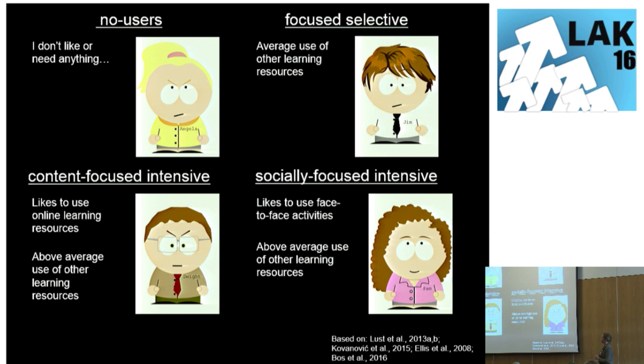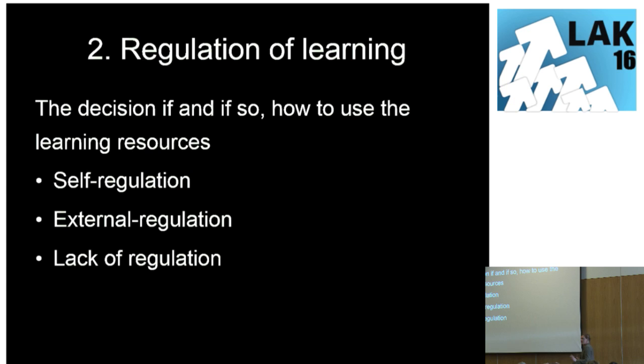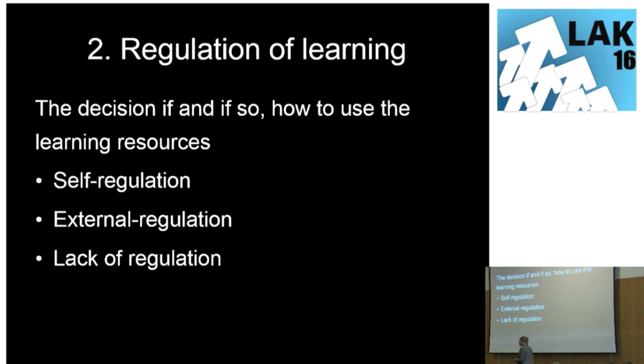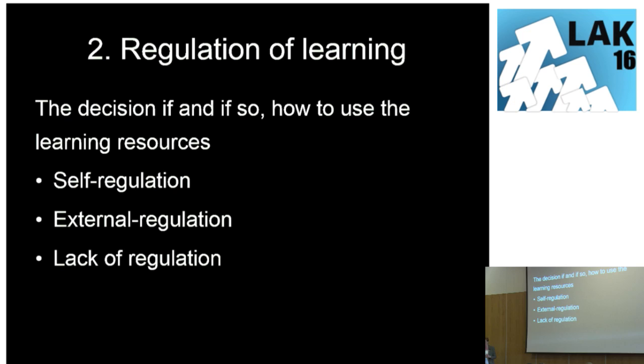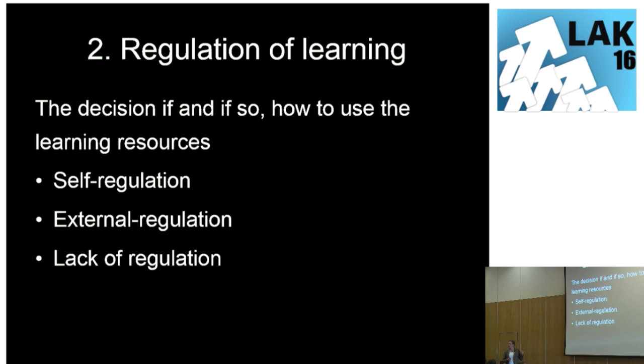We know these profiles exist. We want to know why they occur. If we know why they occur, we can subsequently adjust the learning design. The second challenge we have is regulation of learning. It's about cognitive load theory and how you approach learning. Buckingham Shum said we should enhance the learning data with a broader set of indicators so we can really have more meaning to the data — go beyond the Skinner pigeon.